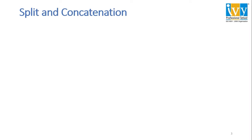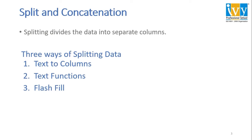Our next topic is going to be split and concatenation in the data cleaning series using Excel. Splitting divides the data into separate columns. There are three ways of splitting the data: the first way is text to column, the second is text function, and the third way is flash fill.